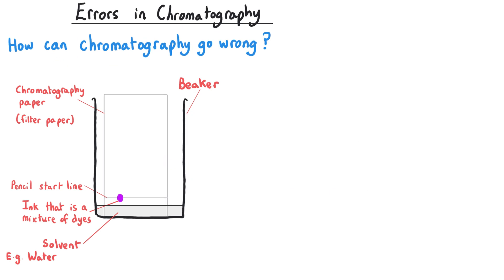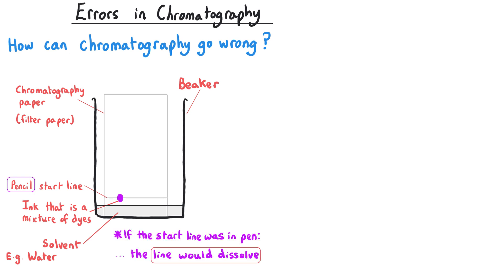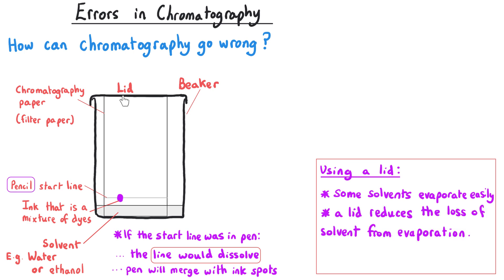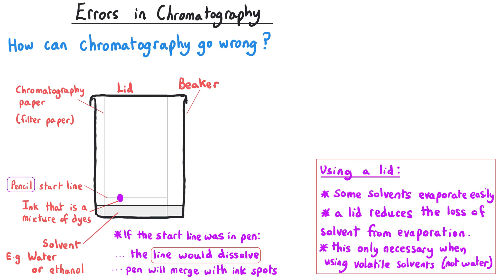It's very important that the line where we place our spots has been drawn in pencil. If it was drawn in pen, when the solvent reaches the ink it will dissolve the line too — it will rise up the paper and blur in with our spots. Because the solvent might not be water but something like ethanol which evaporates quite easily, we sometimes put a lid on the chromatography experiment to reduce the rate at which the solvent evaporates.